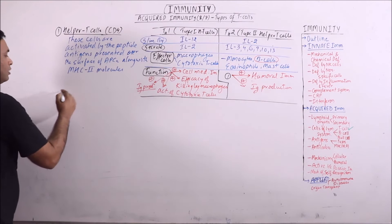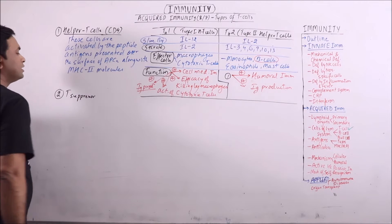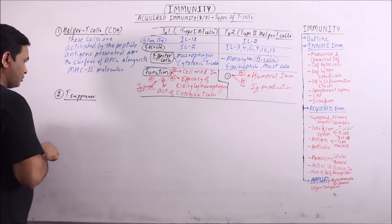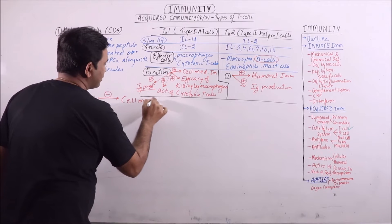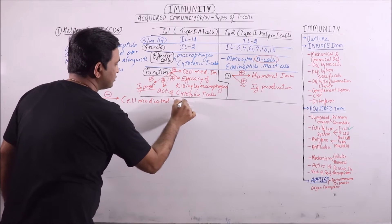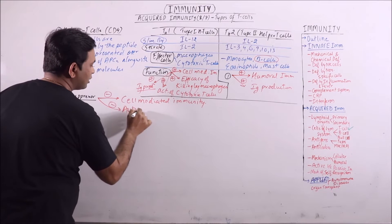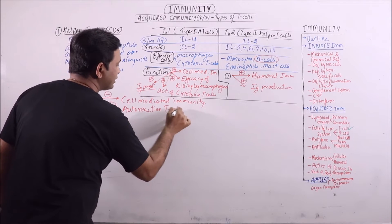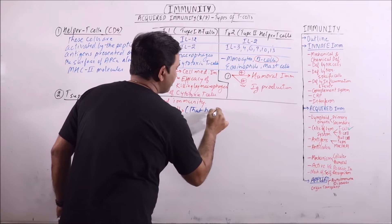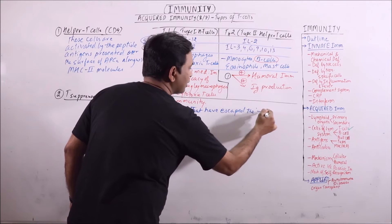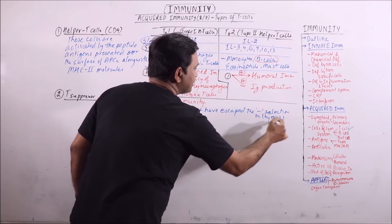Second is T-suppressor cells. Their main function is to inhibit the cell mediated immunity, and these also inhibit the auto-reactive T-cells that have escaped the negative selection in thymus gland.